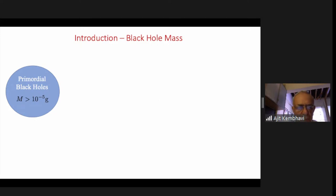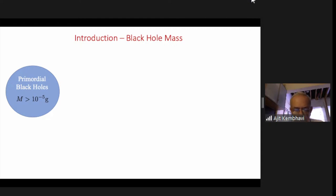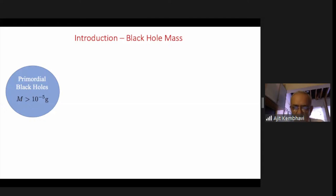Black hole mass is a very important parameter. Just as in stellar astrophysics where mass is the governing parameter — the entire life cycle of a star is completely determined by its mass, with only small changes due to chemical composition, rotation, or magnetic field — in the case of black holes too, the mass is the most important. The smallest mass black holes are what are called primordial or mini black holes.